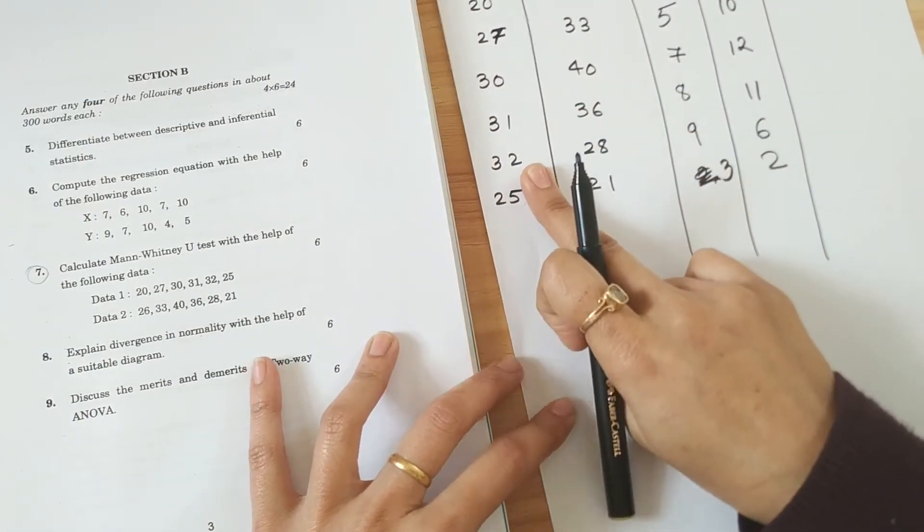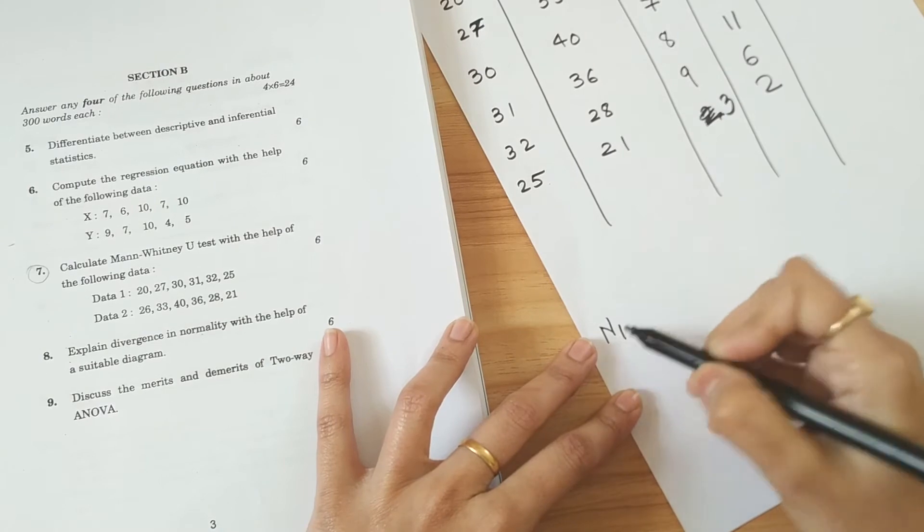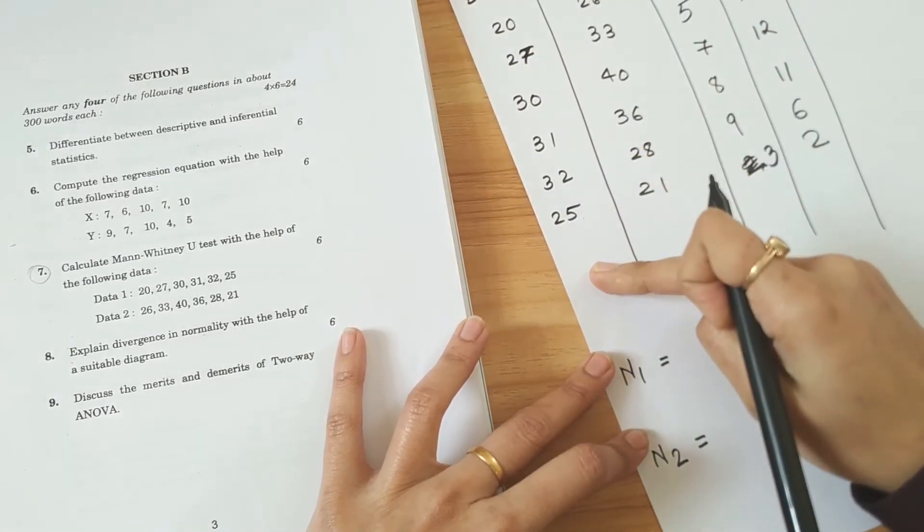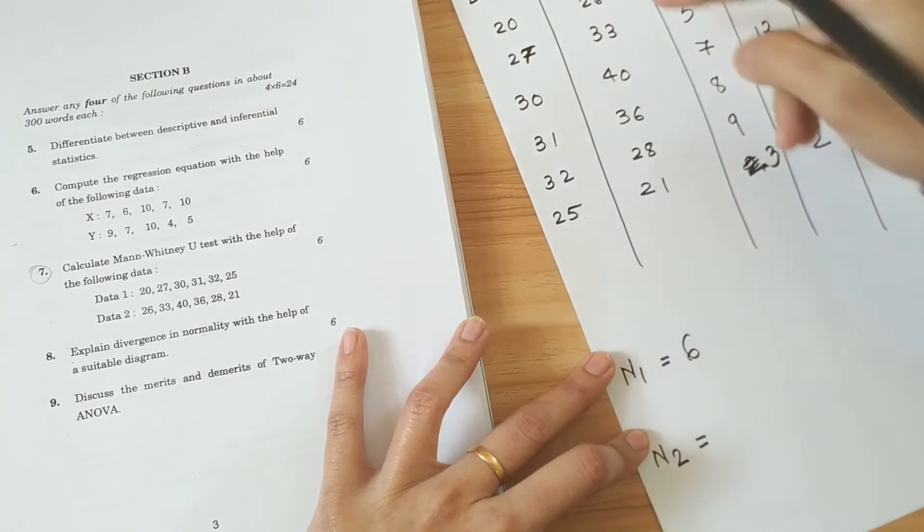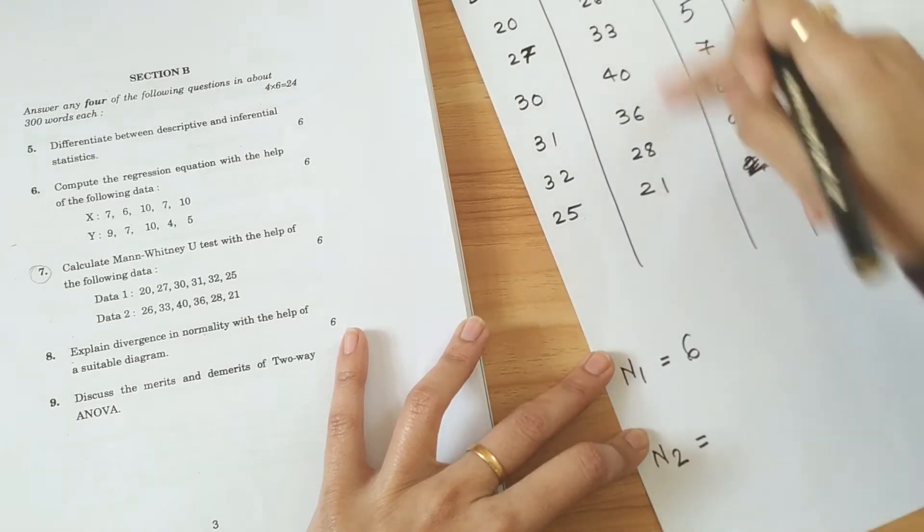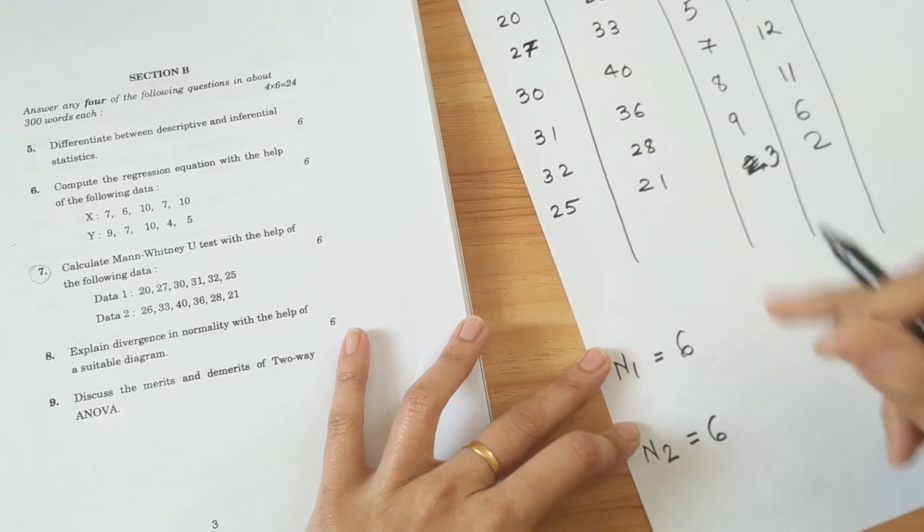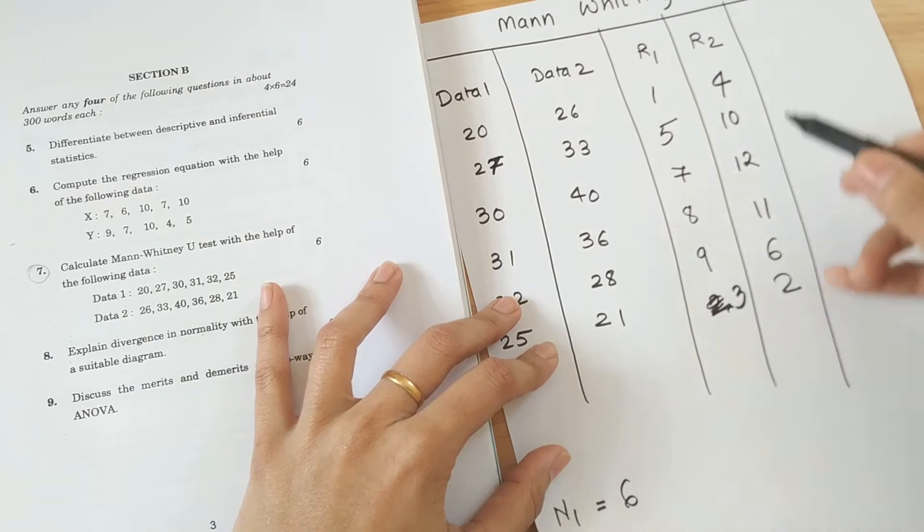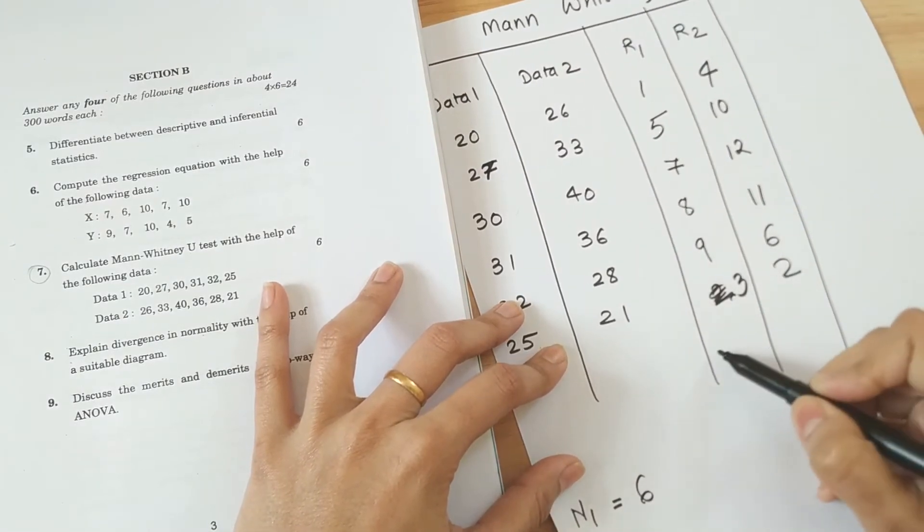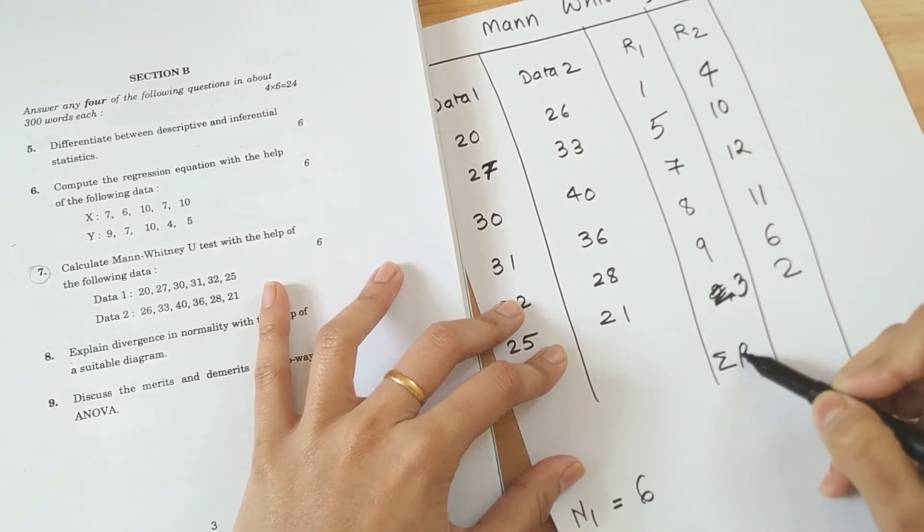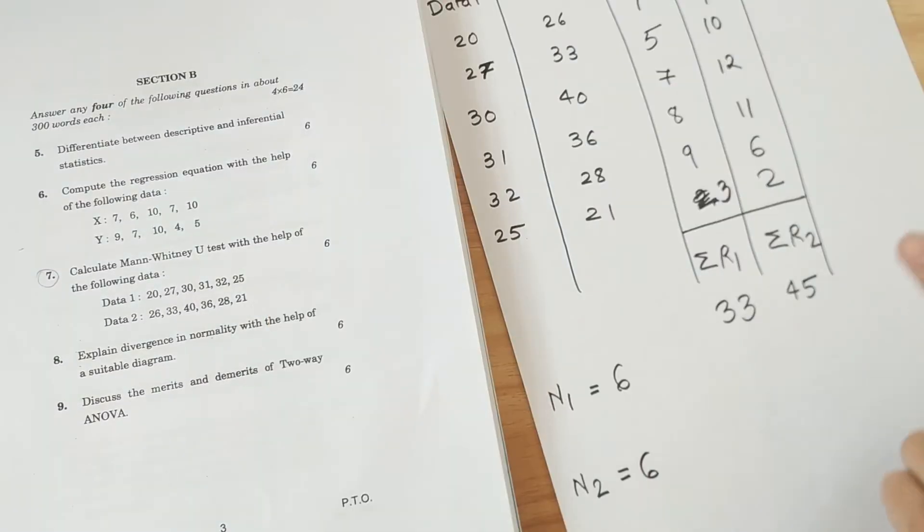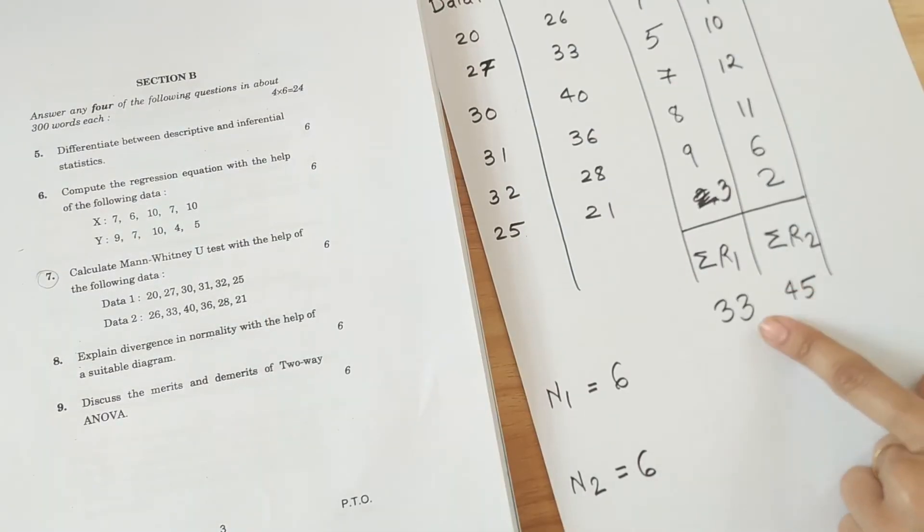Now we check what is N1 and N2. Number of elements in column 1 are 6. Number of elements in column 2 are 6. So N1, N2 are 6 and 6. Now we find out summation of R1 and R2. So sigma R1 and sigma R2. Total of R1 is 33. Total of R2 is 45.